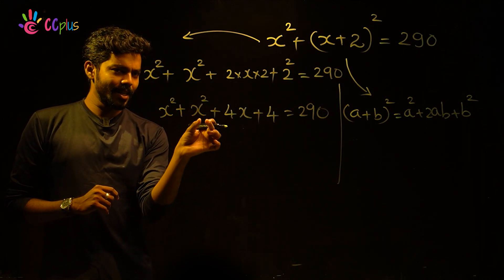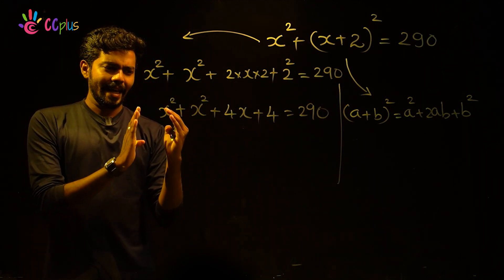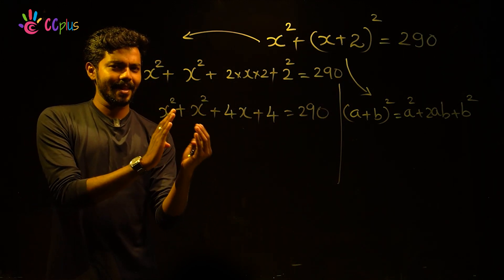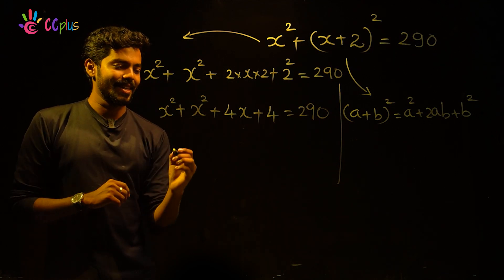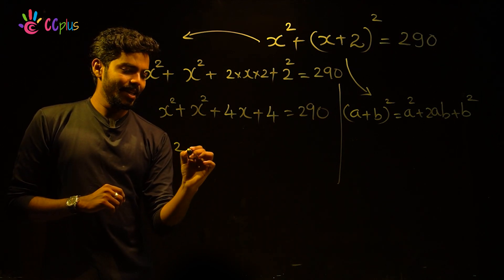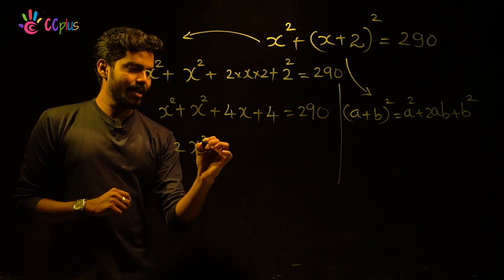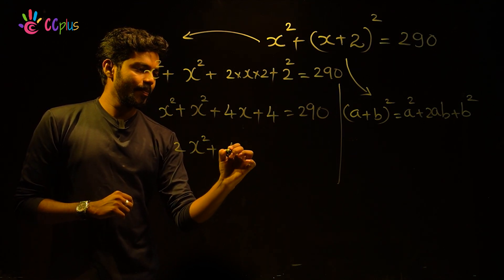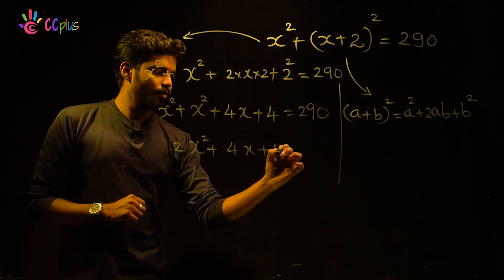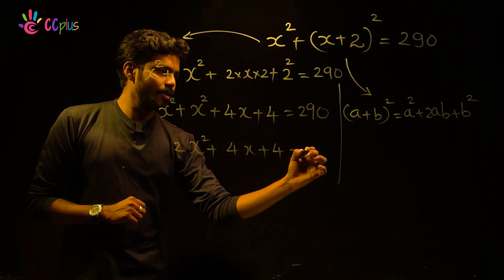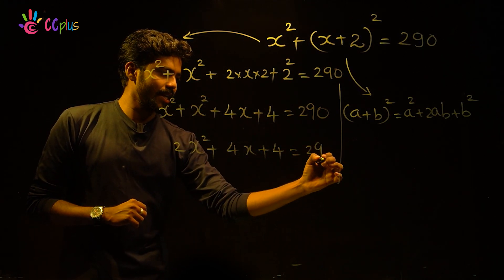Combining x squared plus x squared gives 2x squared. So the equation becomes: 2x squared plus 4x plus 4 is equal to 290.